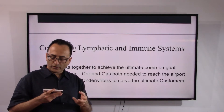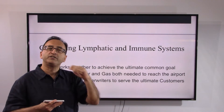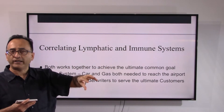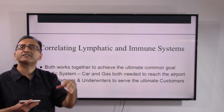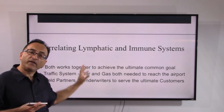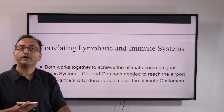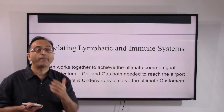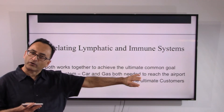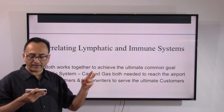Both systems work together to achieve a common goal. Think of the analogy of a traffic system: leaving home to reach an international airport, you need gas and a car. The immune response is like the gas, and the lymphatic system — with its anatomy, lymph vessels, and lymph nodes — is like the car. The immune system generates the immune response, and the lymphatic anatomy carries it out, just as car and gas work together.